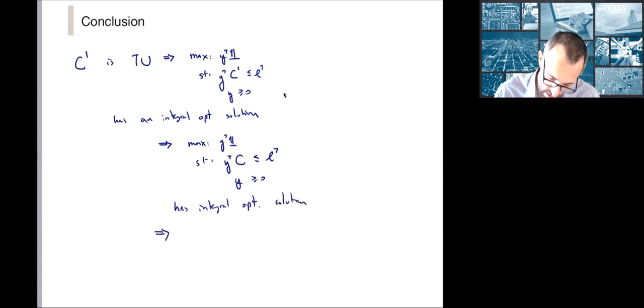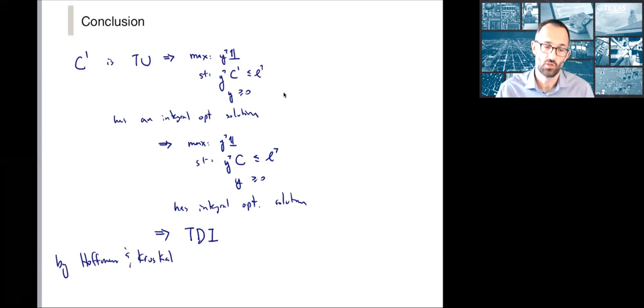Because we can extend this to be an optimal solution for the full problem, this tells us that max y transpose subject to y transpose C, not C dash, less than L transpose has an integral optimal solution. Which implies that our system is total dual integral.